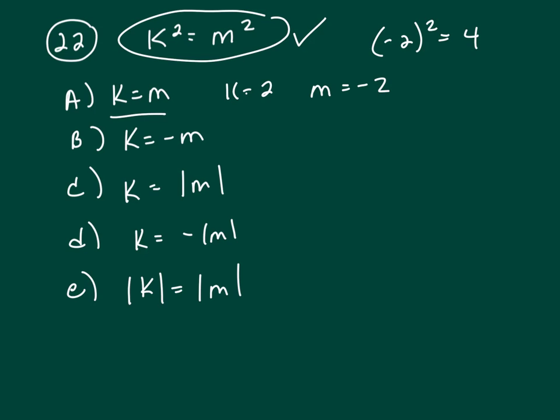But no, k is not equal to m. I've got k equal to 2 and m equal to negative 2. So only one of these can ever be true, which is the very last one.